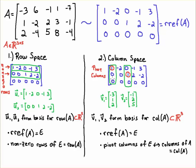For the row space, you pick off the nonzero rows of E, which is your RREF of A. For the column space, you look at the correspondence between your pivot columns — in this case, column one and column three. You go back to the original matrix A, pick off column one and column three, and those vectors from matrix A form your basis for the column space of A, usually denoted col(A).